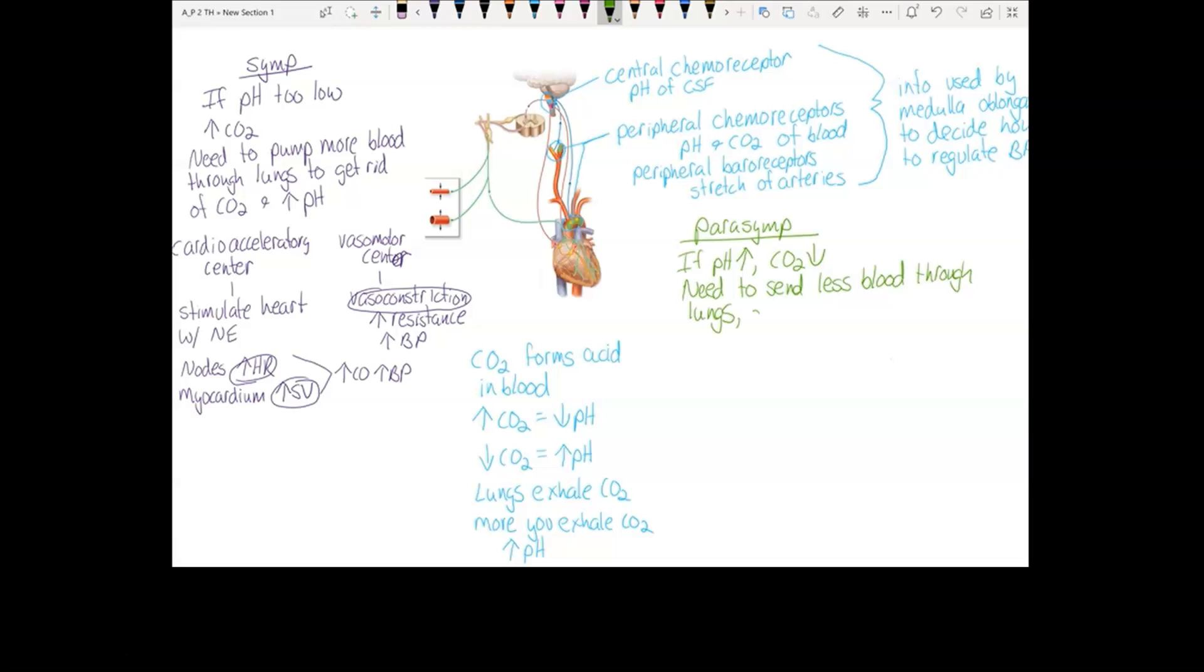That way you can allow carbon dioxide to build up in the blood and bring your pH back down. So in this case, your medulla oblongata will use the cardioinhibitory center.